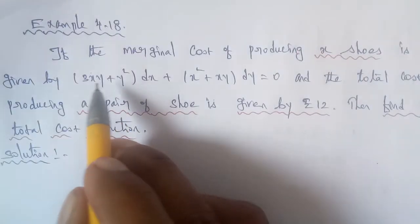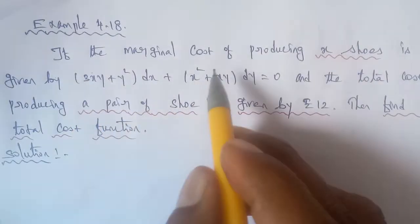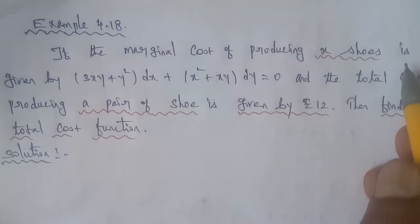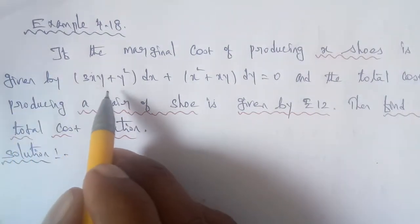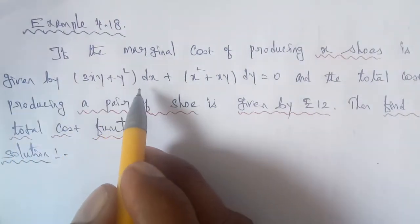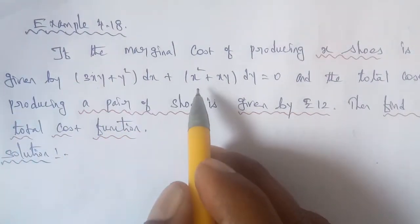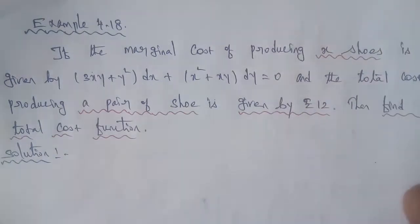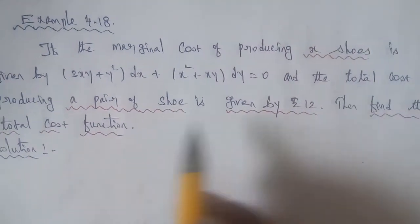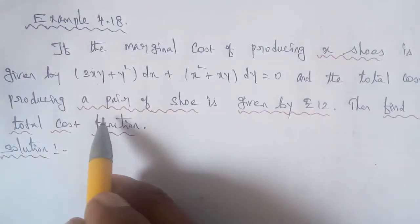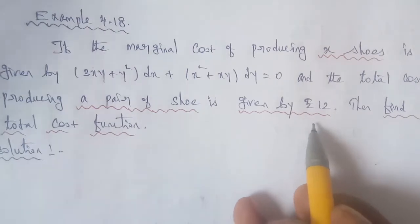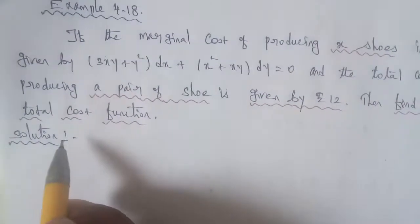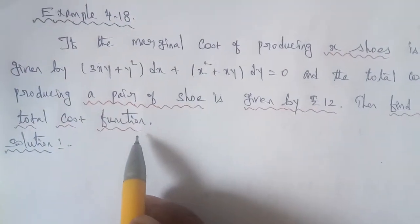Example 4.18: If the marginal cost of producing x shoes is given by (3xy + y²)dx + (x² + xy)dy = 0, and the total cost of producing a pair of shoes is given by rupees 12, then find the total cost function.